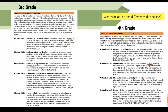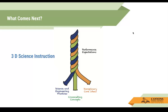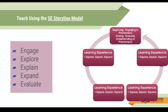Now that we understand the three pieces of good science instruction, let's look at how we bring them together. The model our district has chosen as the best for students is called the 5E Storyline Model. We always start with an engaging phenomenon — it can be a picture, a video, or a classroom experiment — something to engage students in the concepts and applications for the unit. Hold off on explaining why it's happening right away, because students should gather evidence through subsequent learning experiences to explain the phenomenon at the end.